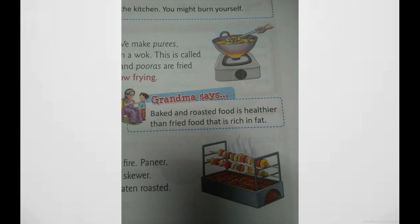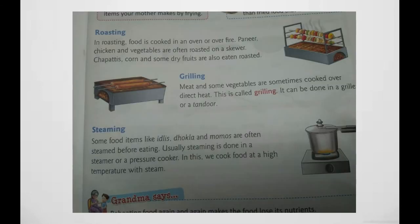Parathas and papadums are fried on a griddle with less oil — this is called shallow frying. In roasting, food is cooked in an oven or over fire. Paneer, chicken, and vegetables are often roasted on a skewer.